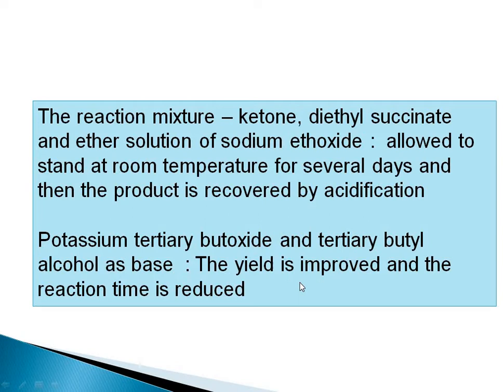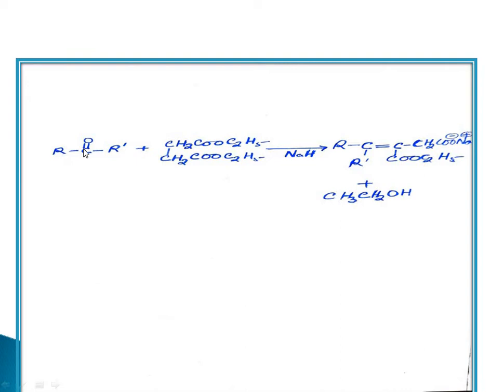The reaction scheme: R–C=O–R' (ketone) reacts with diethyl succinate (CH2COOC2H5–CH2COOC2H5) in base. Because this is like an active methylene compound, a H⁺ is removed from the alpha carbon of the succinate, generating a carbanion (CH⁻). This carbanion then attacks the electrophilic carbon (C⁺ of the carbonyl).